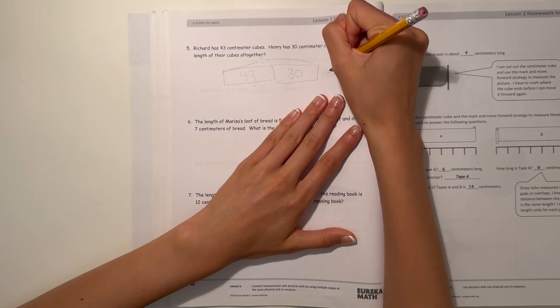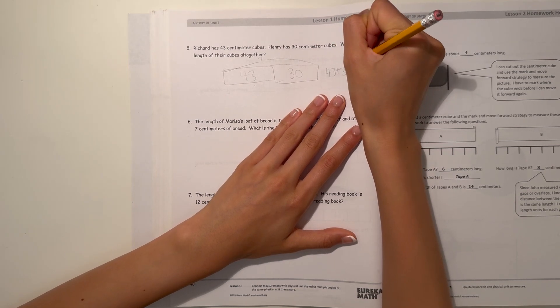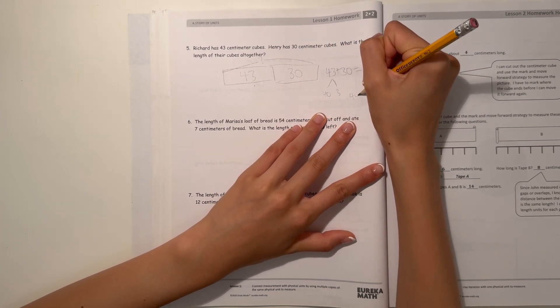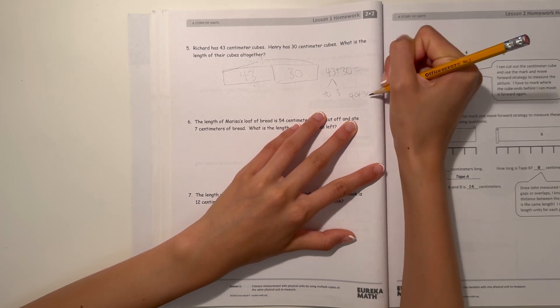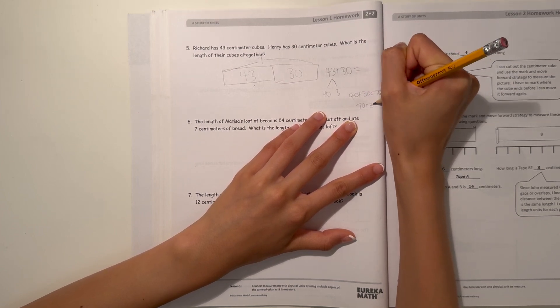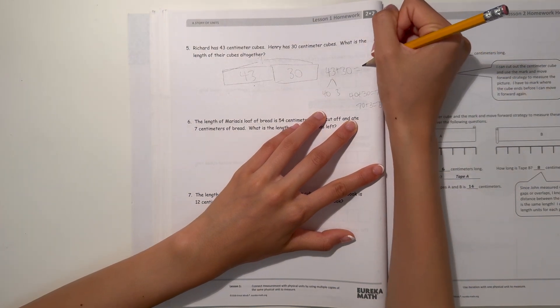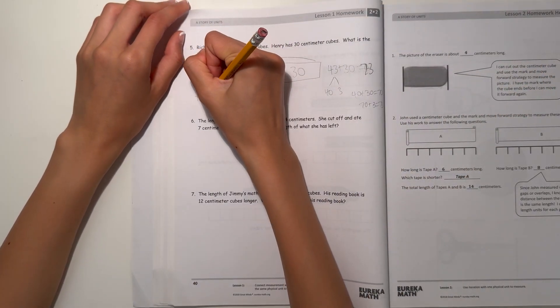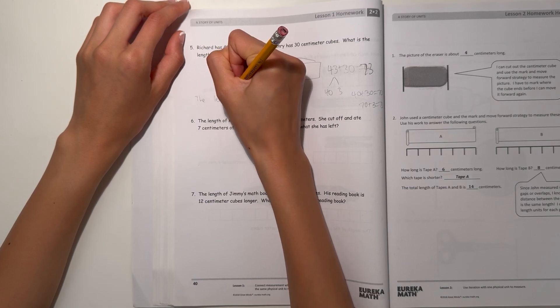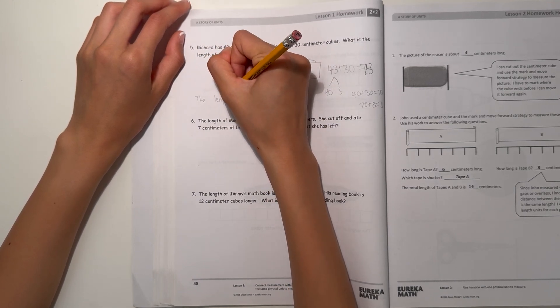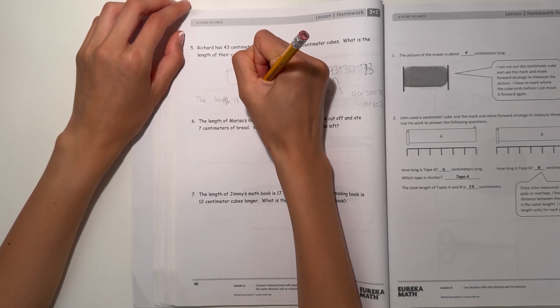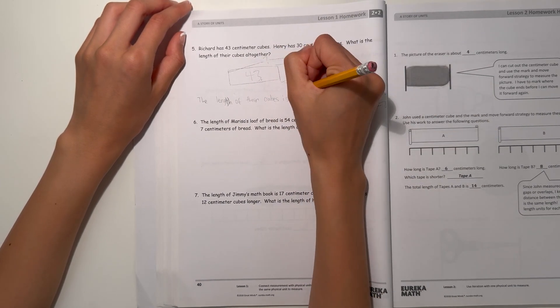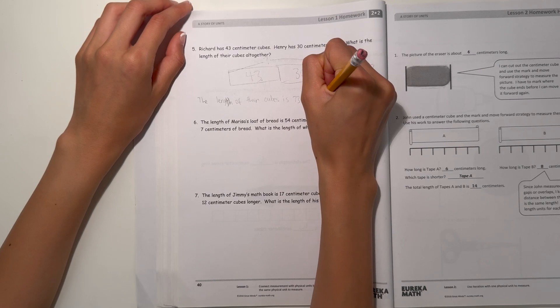We do 43 plus 30. We can break 43 into 40 and 3. 40 plus 30 is 70, and 70 plus 3 is 73. So 43 plus 30 is 73. The length of their cubes is 73 centimeters.